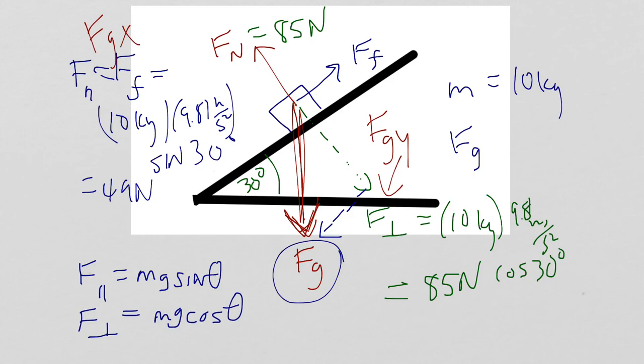So, let me recap here in the end. The object is sitting on the incline. It's not moving. So, the F net is equal to 0.